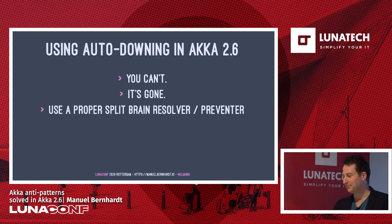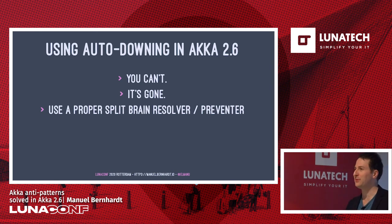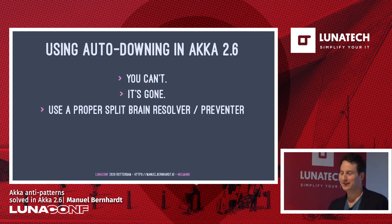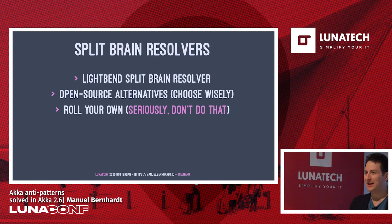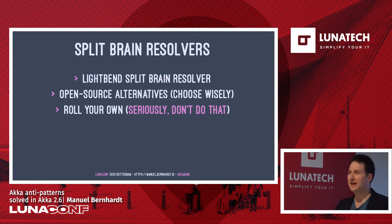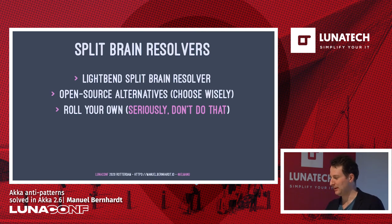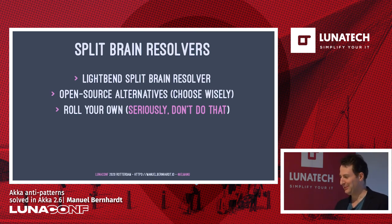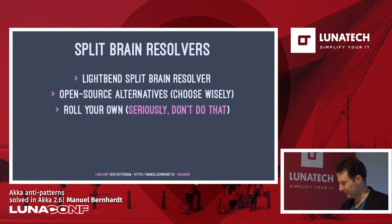How can you use auto-downing in Akka 2.6? You can't — it's removed. You have to use a proper split-brain resolver, or more accurately a split-brain preventer, because by the time you have a split brain it's too late. Lightbend has one written by the people who build Akka. I would recommend using that. Rolling your own split-brain resolver is something I've sadly seen more often than I'd like — most implementations are naive and mostly wrong.